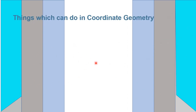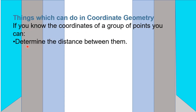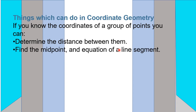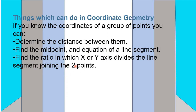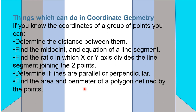What can we do in coordinate geometry? If we know the coordinates of a group of points, we can determine the distance between them, find the midpoint and equation of the line segment, find the ratio in which the X or Y axis divides a line segment joining two points, determine if lines are parallel or perpendicular, and find the area and perimeter of a polygon defined by points in the coordinate plane.